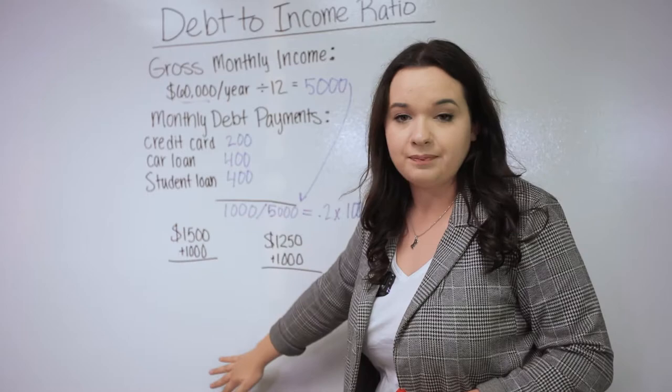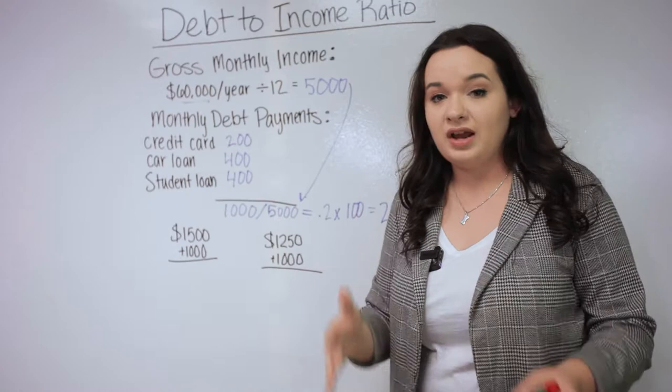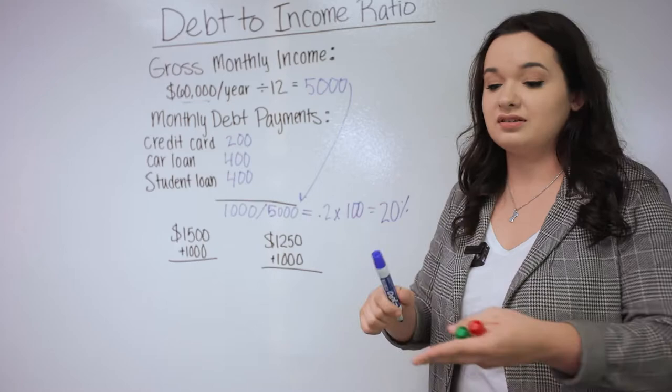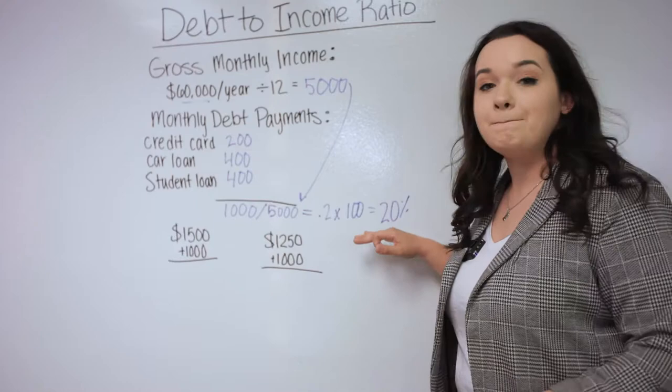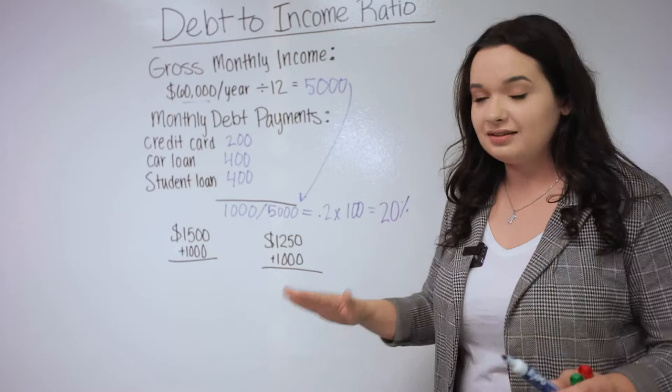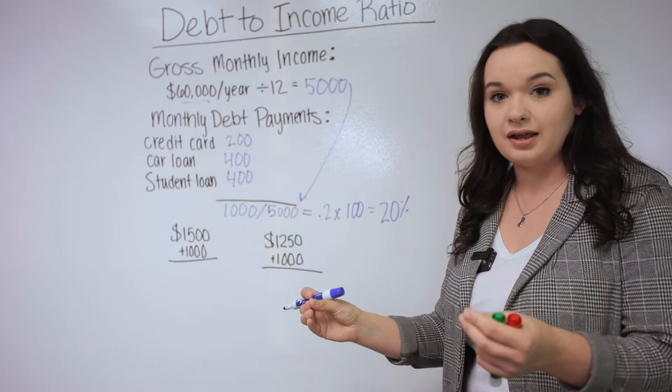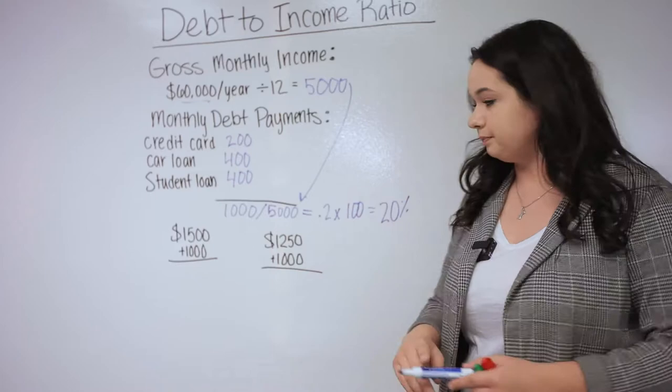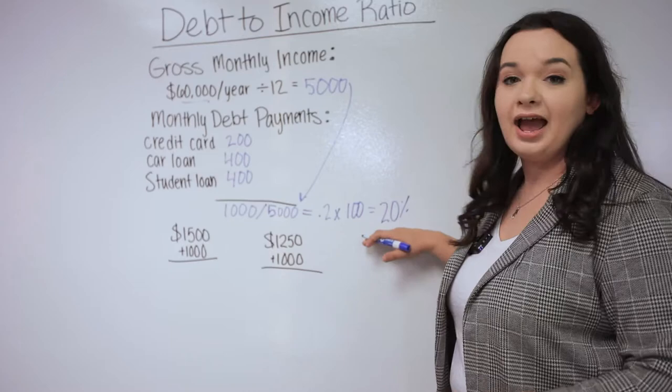When you're getting a loan, different lenders vary in what they're looking for in your debt-to-income ratio. Different loan programs like FHA versus conventional versus USDA also have differing maximums. For this example, I'm going to use a maximum of 45% debt-to-income ratio. That's a good goal when working this calculation out, because it will be accepted by most lenders and most loan types.